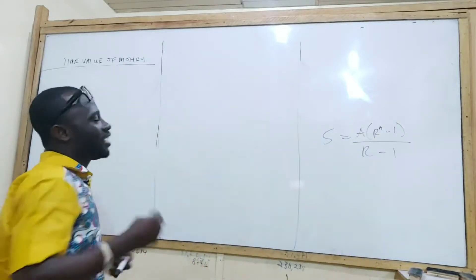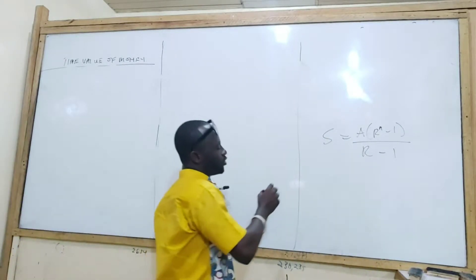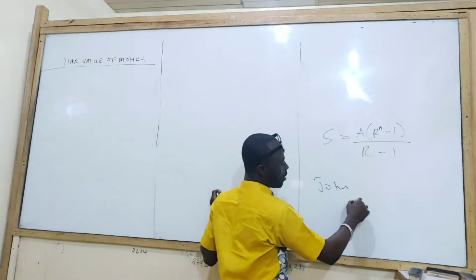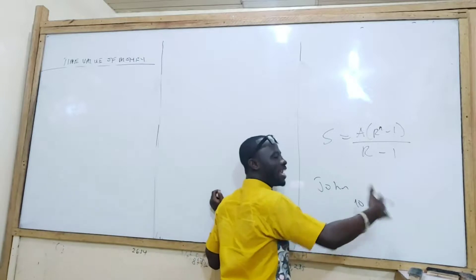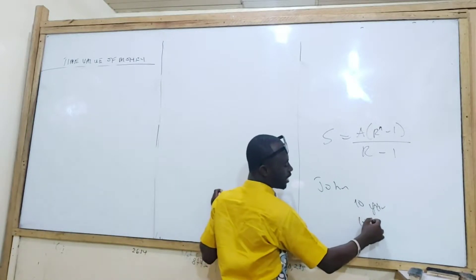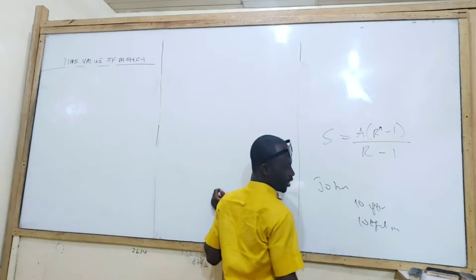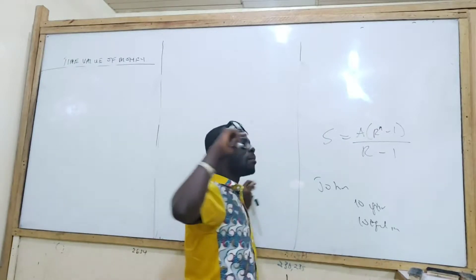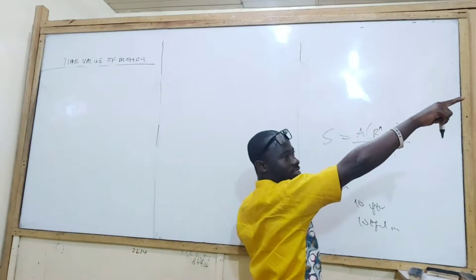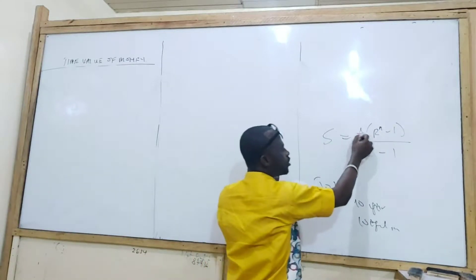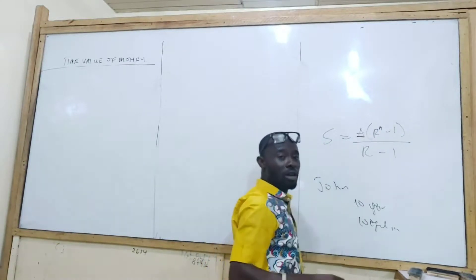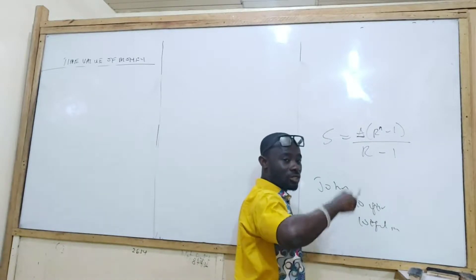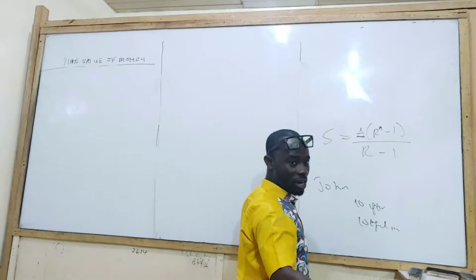In this question, John has borrowed and he is supposed to pay the money back in ten years. The money has to be paid in ten equal installments. We need to find the value of the money in ten years. Then we find the equal installments using the geometric progression. So this is a compound interest as well as the geometric progression approach.